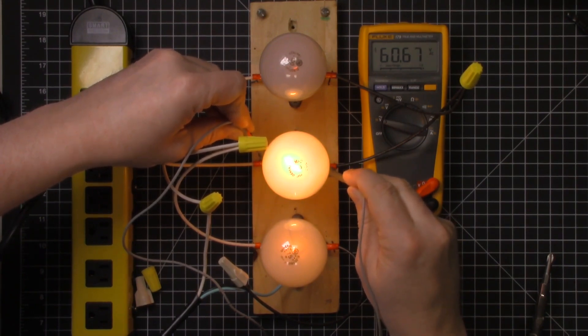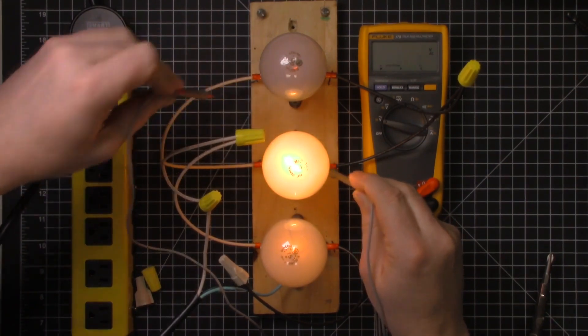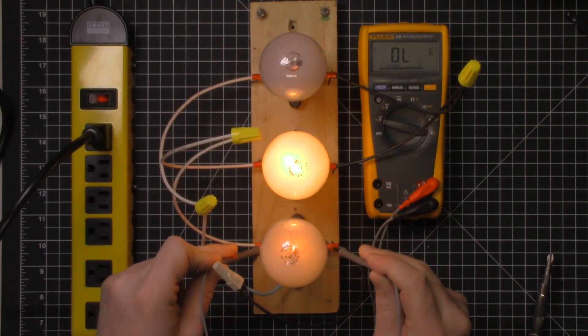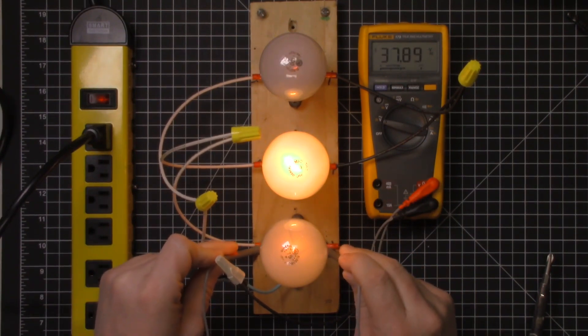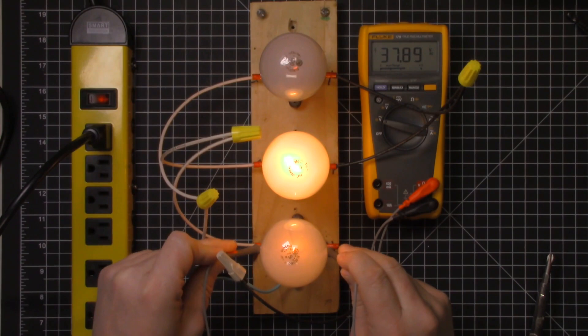So you've got 24 plus 60, so that's 84 volts. And then the last bit of voltage, the 37 volts, is over here.